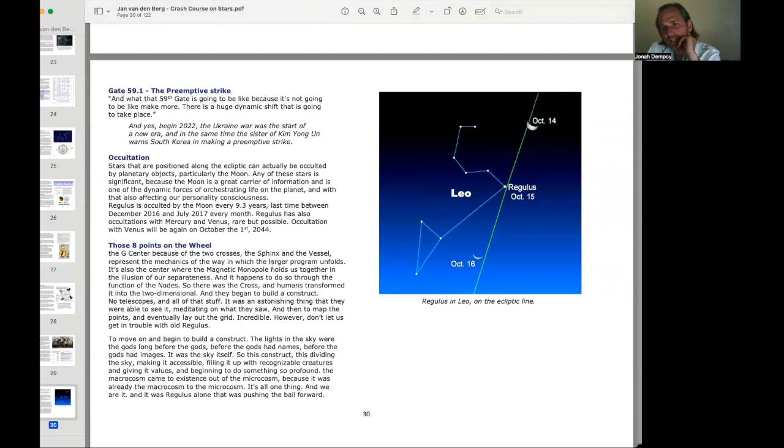Those eight points on the wheel. The g-center, because of the two crosses, the sphinx and the vessel, represents the mechanics of the way in which the larger program unfolds. It's also the center where the magnetic monopole holds us together in the illusion of our separateness. And it happens to do so through the function of the nodes. So there was the cross and humans transformed it into the two dimensional. And they began to build a construct. It was an astonishing thing that they were able to see it, meditating on what they saw.